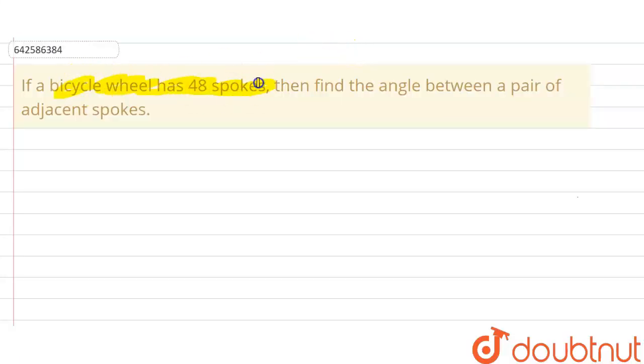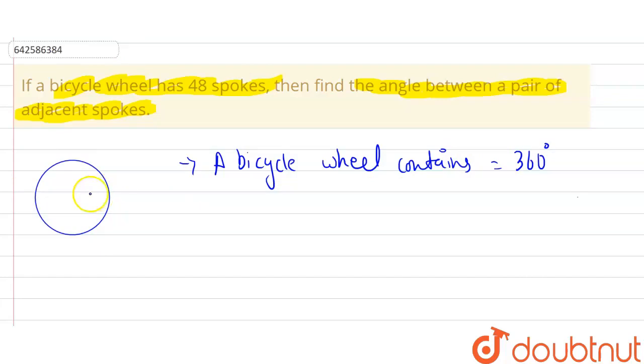So we can write that since we know a bicycle wheel contains how many degrees of angle—it contains 360 degrees. Because if we can see this wheel, suppose this is a wheel, the whole bicycle wheel contains complete angle which is 360 degrees.